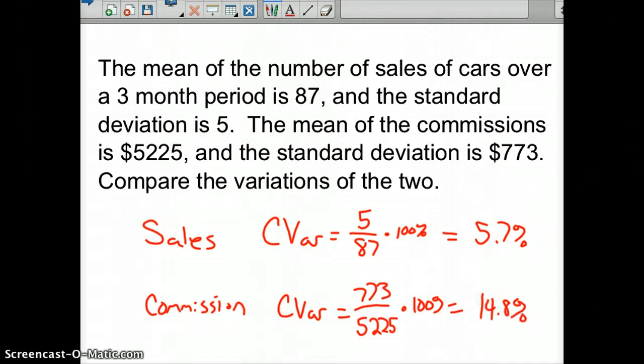And so what that tells us is that our commission data is more spread out than the sales data. Sales data is pretty much very close - almost all the data is very close to that 87,